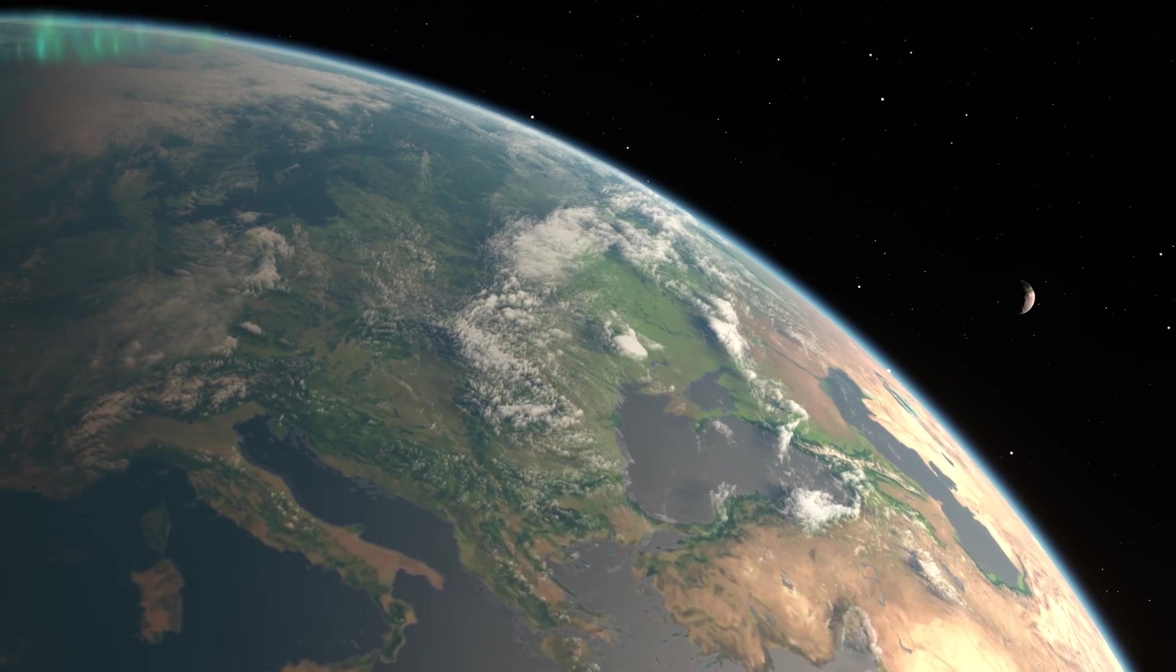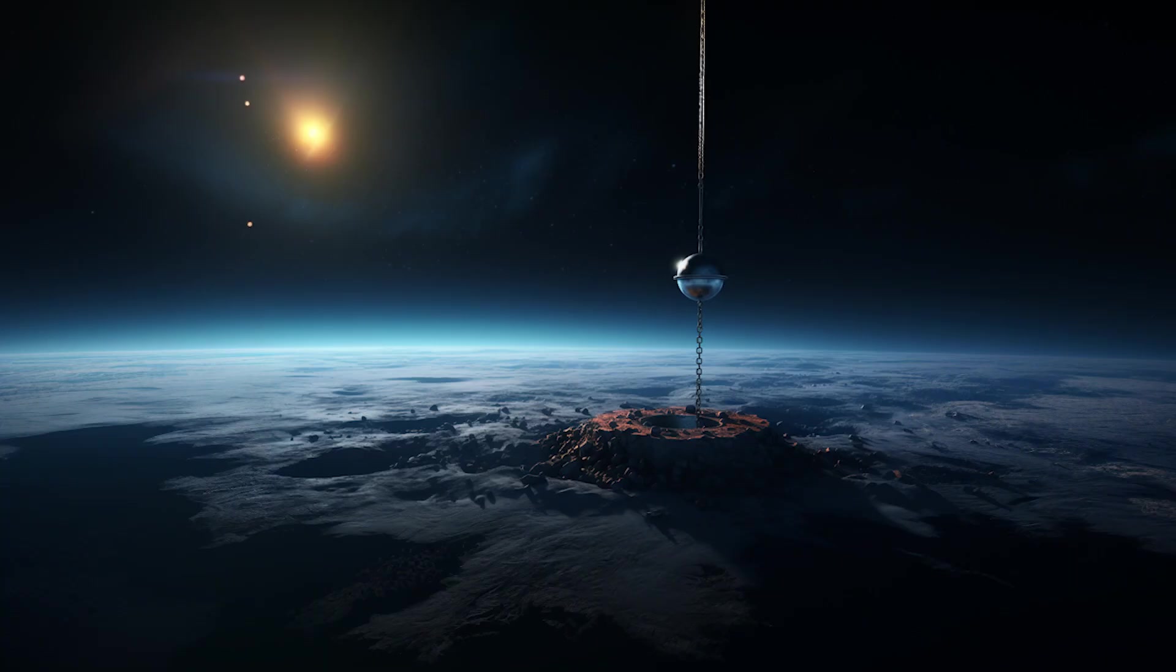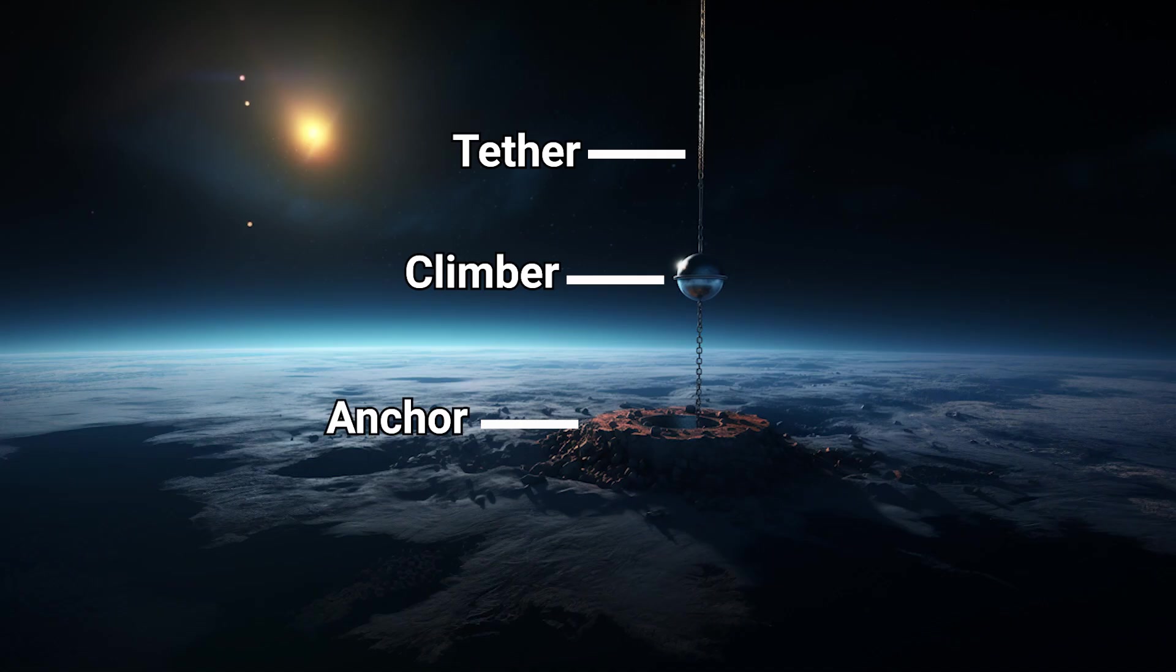What would a space elevator look like in real life? There are four major components: the tether, anchor, counterweight, and the climber.